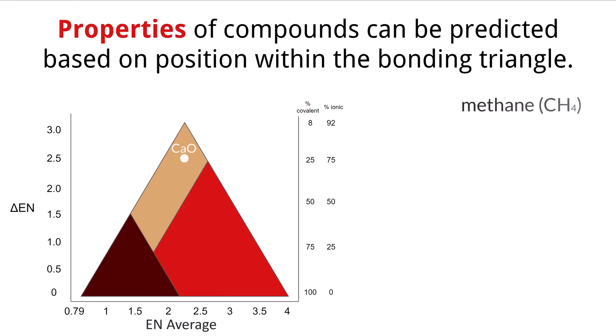If we were to take methane, CH4, we can look at our values when bonding carbon and hydrogen. Carbon has an electronegativity of 2.5 and hydrogen has an electronegativity of 2.1. We get an electronegativity difference of 0.4 and an average of 2.3. Let's see where that will fall on our bonding triangle. We see that CH4 falls far in the covalent range of bonding.